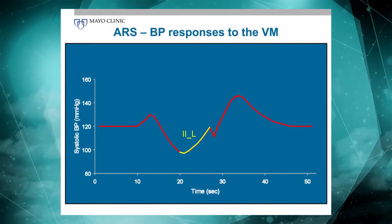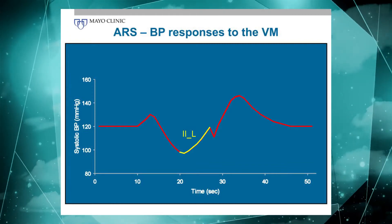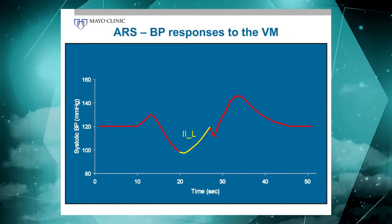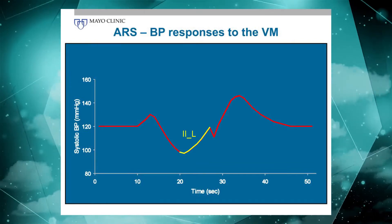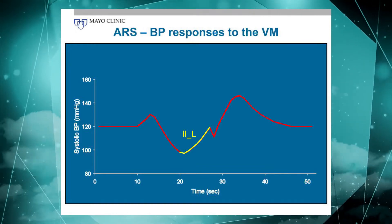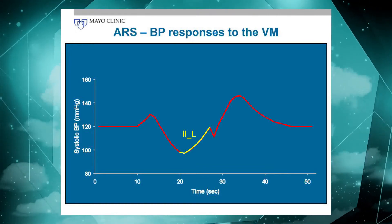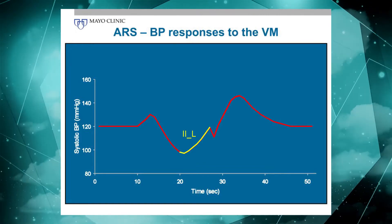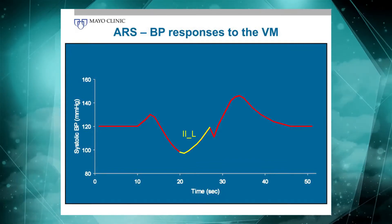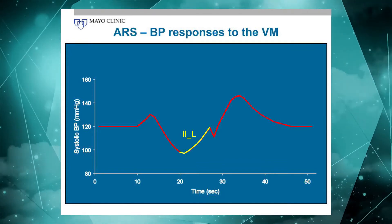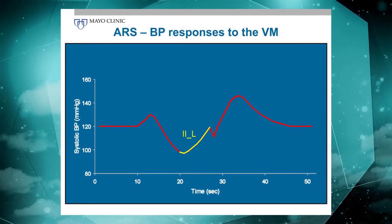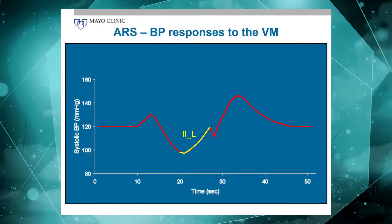Now it gets interesting — that's late phase two. The baroreceptor senses the drop in blood pressure, resulting in vagal withdrawal and sympathetic stimulation. Peripheral resistance increases, cardiac output increases, heart rate increases. As a result, blood pressure stops falling and eventually returns to baseline while intrathoracic pressure is still elevated.